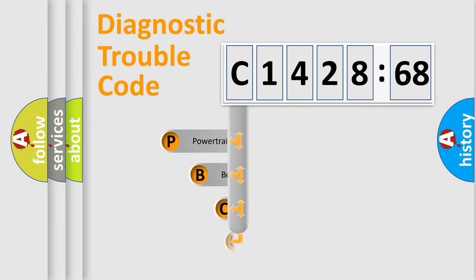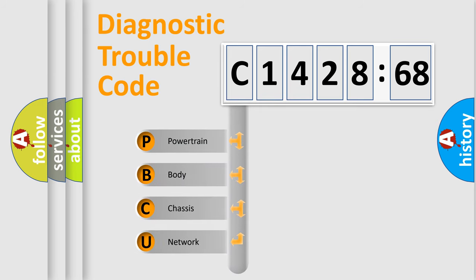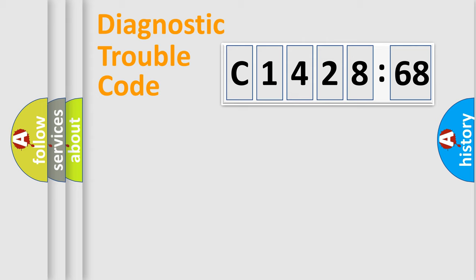Let's do this. First, let's look at the history of diagnostic fault code composition according to the OBD2 protocol, which is unified for all automakers since 2000. We divide the electric system of the automobile into four basic units.